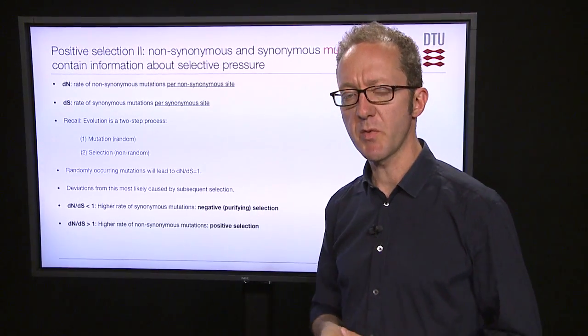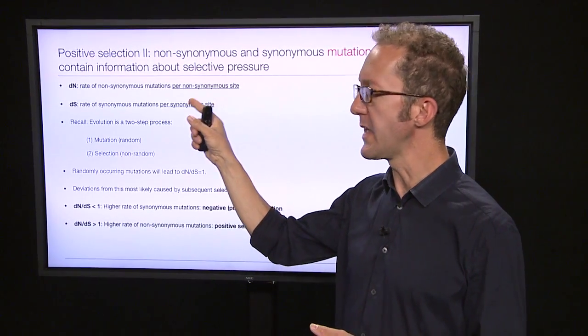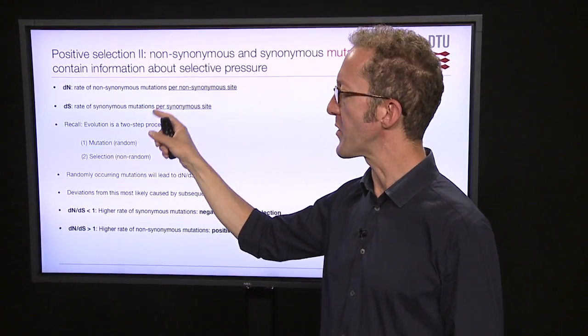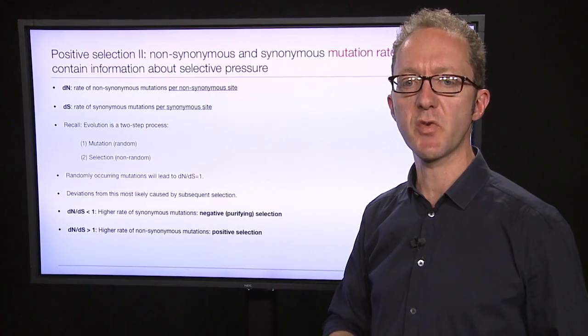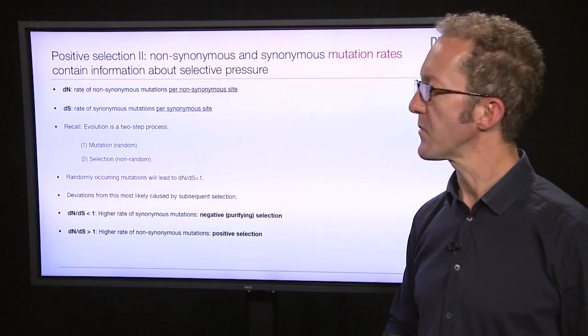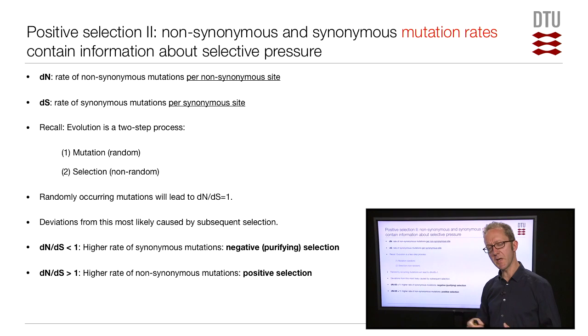Now, based on that terminology, we now define the two following important terms, DN and DS. DN is the rate of non-synonymous mutations, meaning the number of amino acid changing mutations happening per time divided by the number of non-synonymous sites. So this is a way of normalizing this measure. DS, similarly, is the rate of synonymous mutations, the rate of silent mutations, number of silent mutations per time divided by the number of synonymous sites. Again, we're normalizing here.